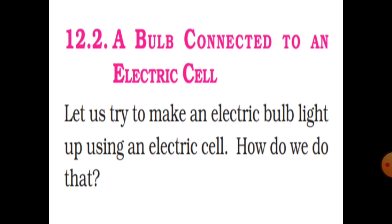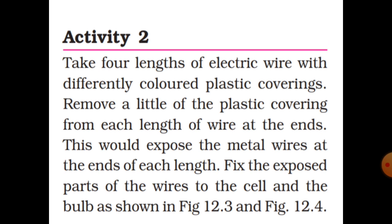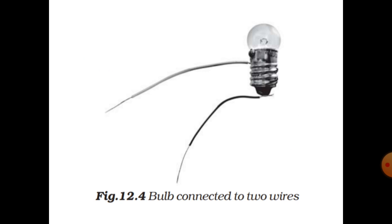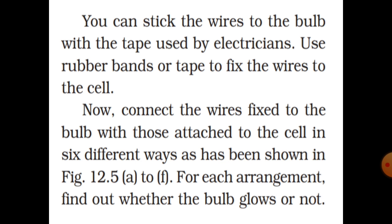Now let us light up a bulb using an electric cell. Take four lengths of electric wire with different colored plastic coverings. Remove a little of the plastic covering from each end of the wire to expose the metal. Fix the exposed part of the wire to the cell and the bulb as shown in the figure.